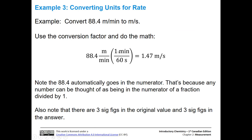So we have one minute divided by 60 seconds — the minute is in the numerator, and that will cancel out our minutes in the denominator in our initial quantity. Remember, the other way to write this is 60 seconds over one minute, and that's completely equivalent. But we have to turn it this way because we have minutes in the denominator and we want to get rid of them. So 88.4 divided by 60 gives us 1.47 meters per second. The minutes cancel out and we end up with meters per second.